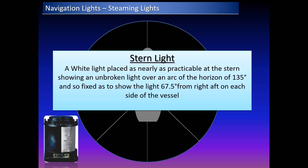The stern light is defined as a white light placed as nearly as practicable at the stern, showing an unbroken light over an arc of 135 degrees — fixed to show the light 67.5 degrees from right aft on each side of the vessel. The key phrase here is 'as nearly as practicable,' meaning if it is not absolutely practicable to place it exactly at the stern, it should be positioned as close as possible.